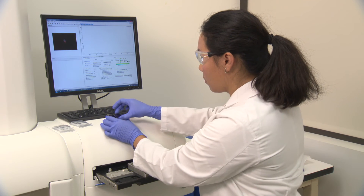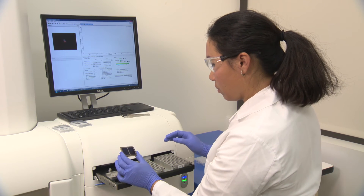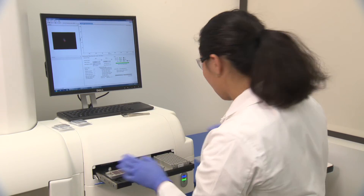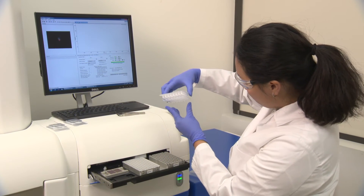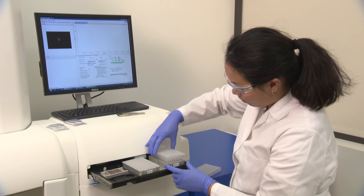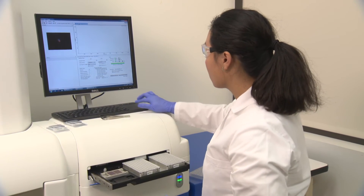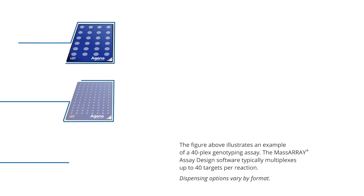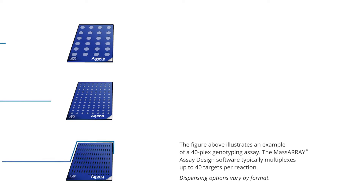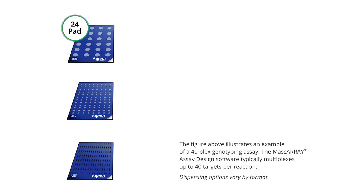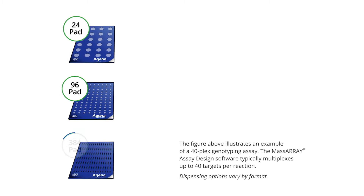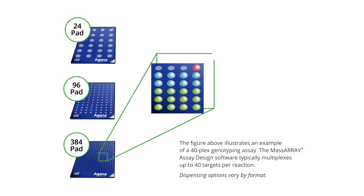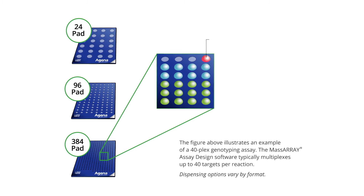Transferring the analyte mixture is simple with the mass array system with chip prep module. Operators can load up to two microtiter plates and two spectrochip arrays onto their system, select their settings, hit start, and walk away. The spectrochip arrays come in one of three formats: 24, 96, or 384 pads, and the mass array system can scale to accommodate any of the three formats.